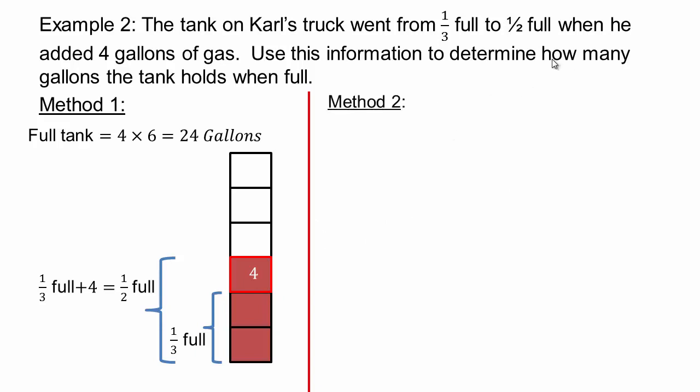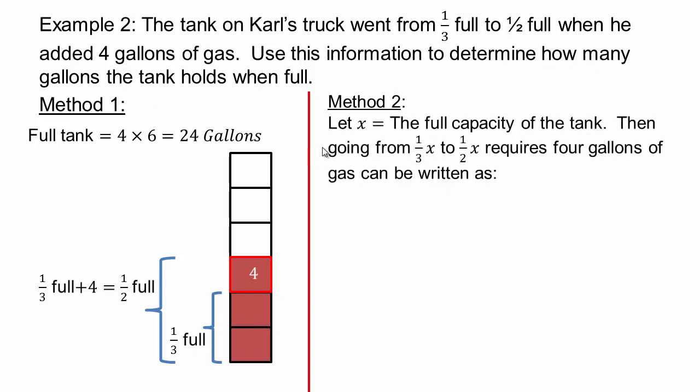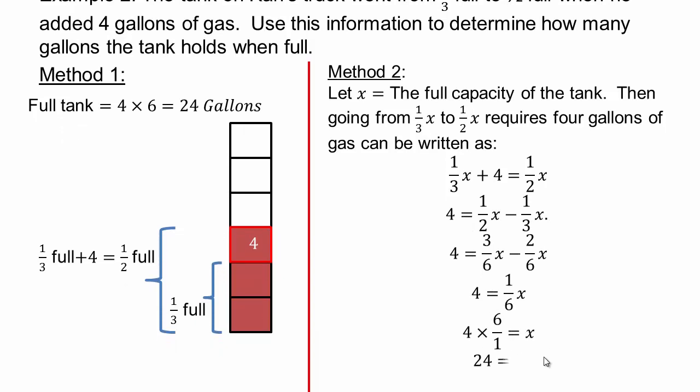Let's see how we would do it algebraically. Since we don't know how many gallons the tank holds when full, let's call x the full capacity of the tank. Then going from one-third x to half x requires four gallons, so that means what? One-third x plus four is equal to half x, and that's this picture right here. And then solve for x. So x is 4 times 6, or 24, so full tank's capacity is 24 gallons. Look at the similarity between this process and this visual process. For some people, one method is better than another. You decide which you prefer, and it does not matter as long as you can solve the problem. You should write correct mathematically if you're writing it this way.